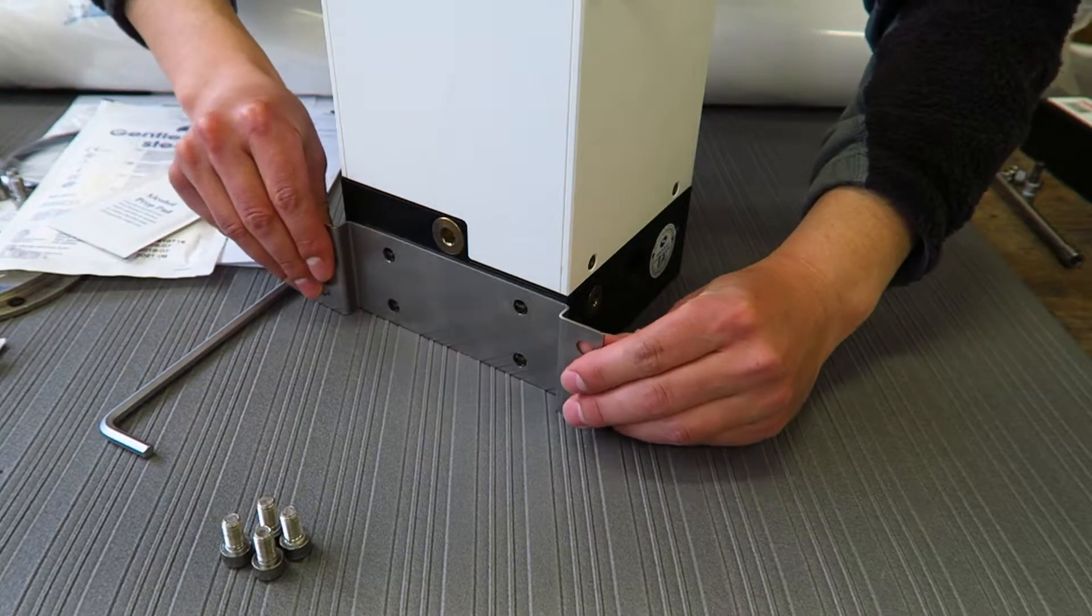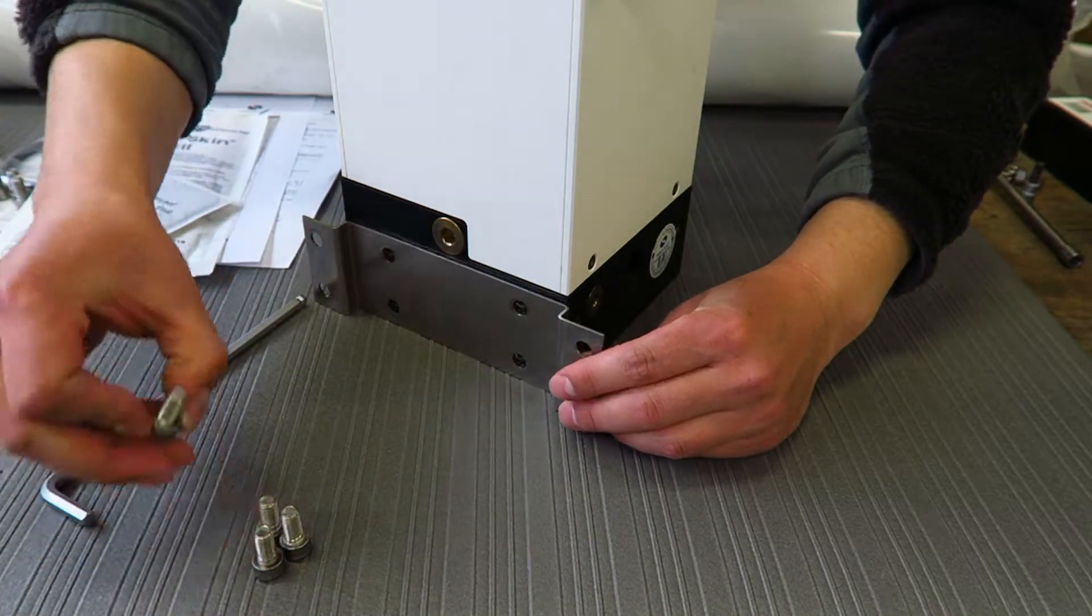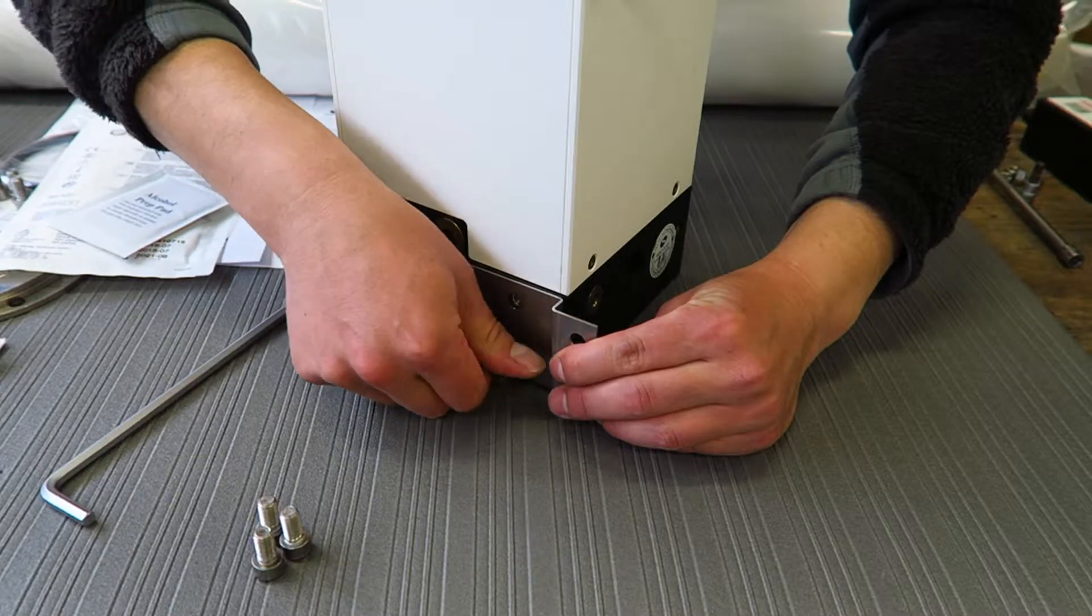So you need four of these short bolts and the bracket cannot be mounted in the wrong position. It's very easy. It goes on both ways.